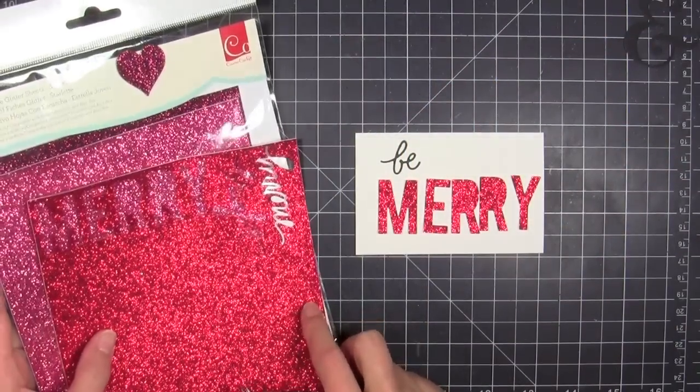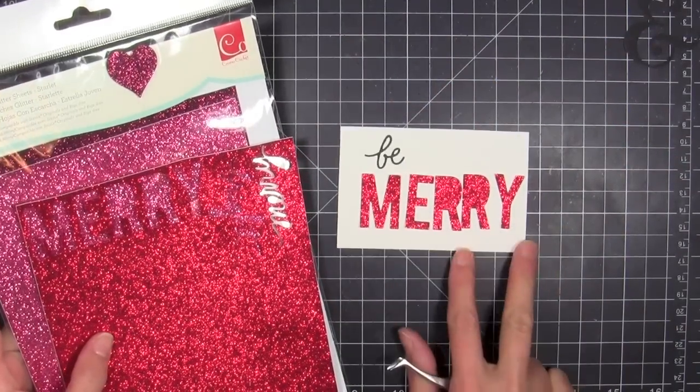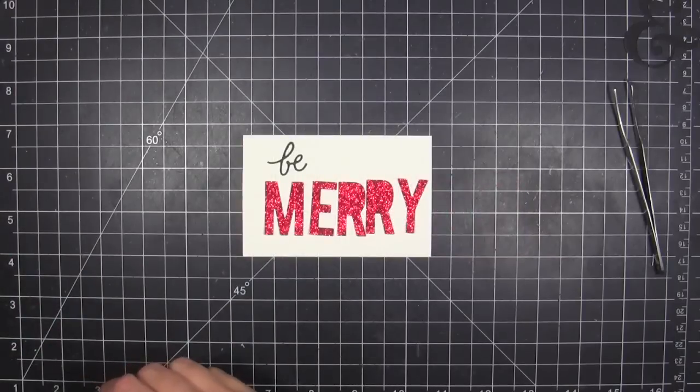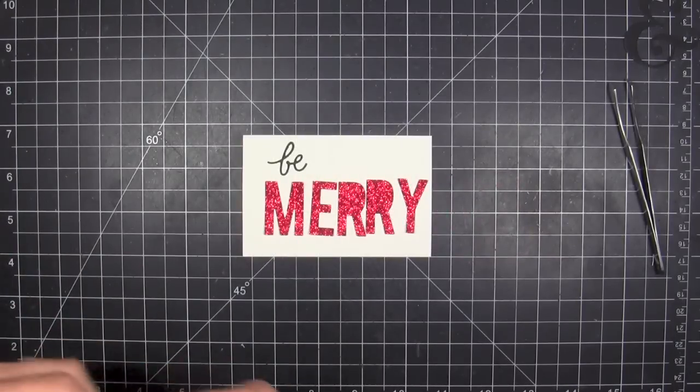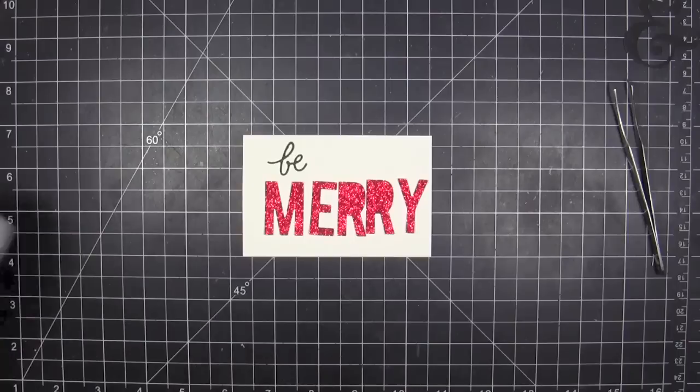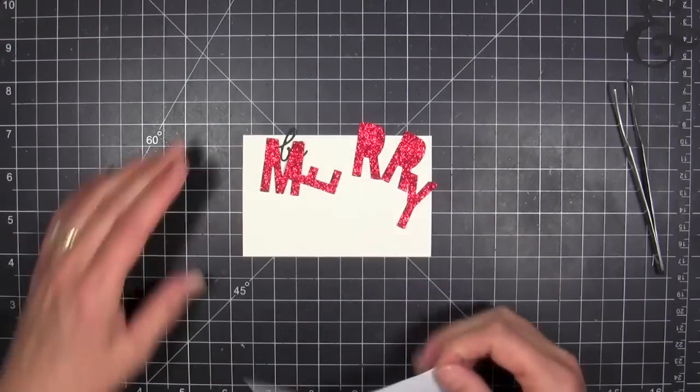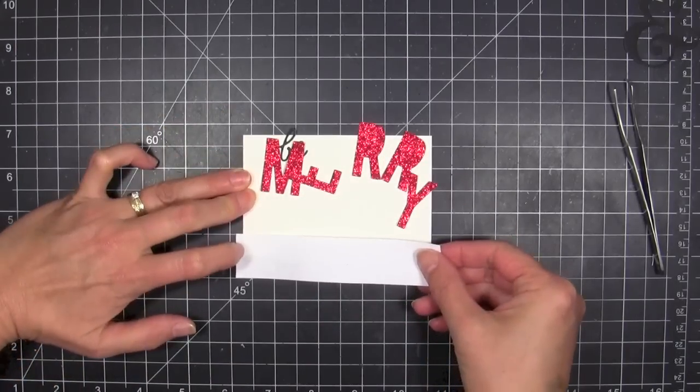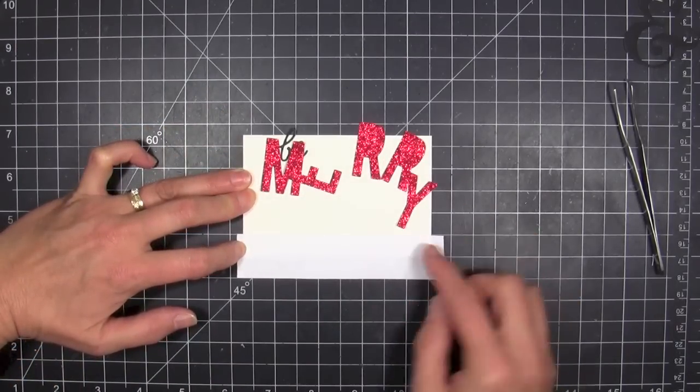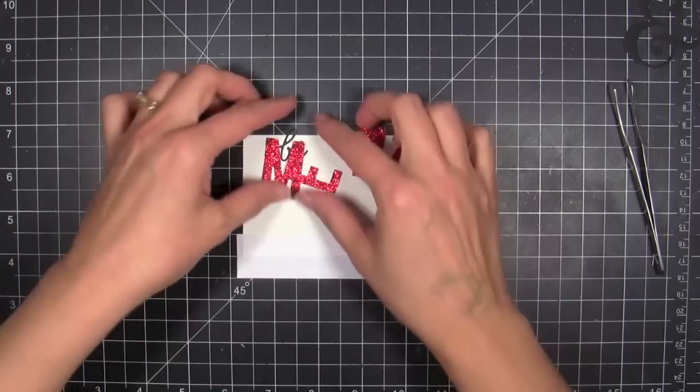In the meantime, I'm going to decorate the topper part. I die cut a 'Be' from the Merry and Bright die cut words from the Essentials by Ellen collection out of black cardstock. I used Savvy's Merry die to die cut that from some Cosmo Cricket glitter sheets, which are self-adhesive.